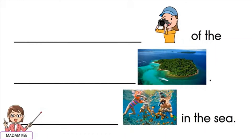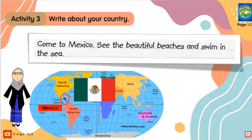So today Miss Fazlina is going to continue the lesson with phonics. So in your book, page 112, activity 3: write about your country. The example given to you is for the country Mexico. For example: Come to Mexico, see the beautiful beaches and swim in the sea.